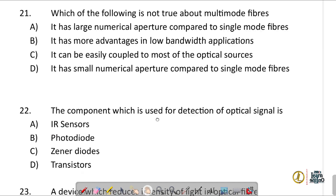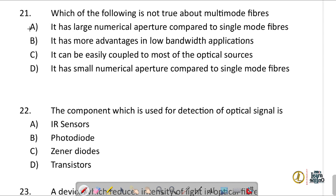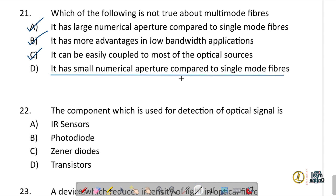Which of the following is not true about multimode fibers? The correct answer is option D. Multimode fibers actually have a large numerical aperture compared to single-mode fibers. They have more advantages in low-bandwidth applications due to higher dispersion losses. Due to their large numerical aperture, they can be easily coupled to most optical sources. The false statement is option D, which says multimode fibers have a small numerical aperture.